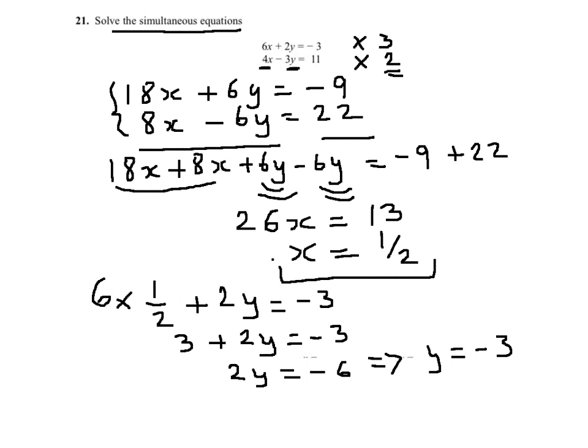Thank you. So two values, x equals half and y equals minus 3, are the solutions to the simultaneous equation.